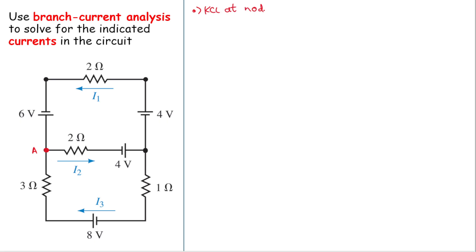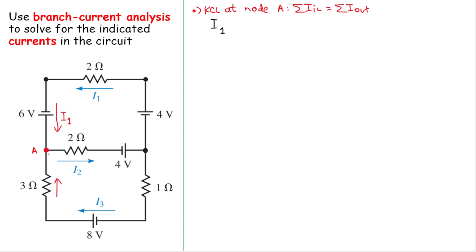KCL states that the sum of the currents going in will equal the sum of the currents going out. The current going into node A is i1, which flows through and enters the node, so we have i1. We also have i3, which also goes into node A. So we have i1 plus i3.